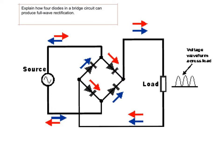So it has to flow down through this diode here. There are now two routes for it to flow at this point, but again it can't flow backwards through the diode, so it flows in this direction. Look at the red arrow up here — it flows through the load and back round into the bridge, where it can flow out.